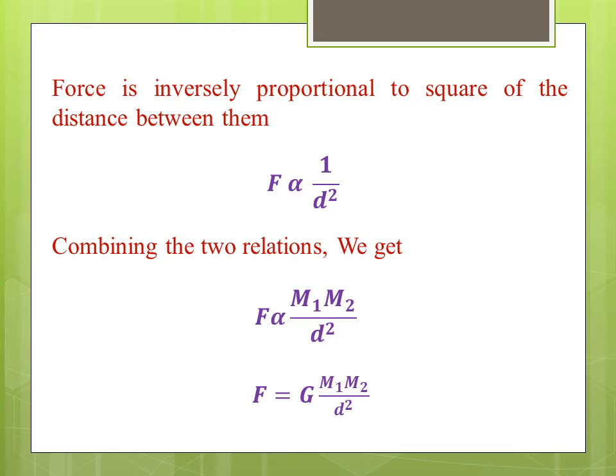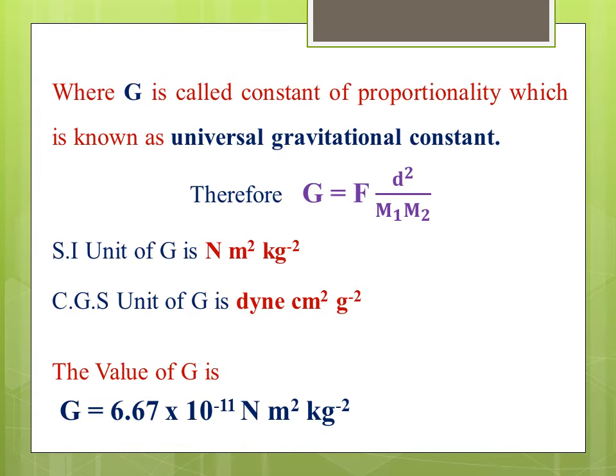Combining the two relations, we get F is proportional to m1 into m2 by d squared, so we get F equals G into m1 into m2 by d squared, where G is called constant of proportionality, which is known as universal gravitational constant. Therefore G equals F into d squared by m1 into m2. The SI unit of G is newton meter square per kilogram square, the CGS unit of G is dyne centimeter square per gram square. The value of G is 6.67 into 10 power minus 11 newton meter square per kilogram square.